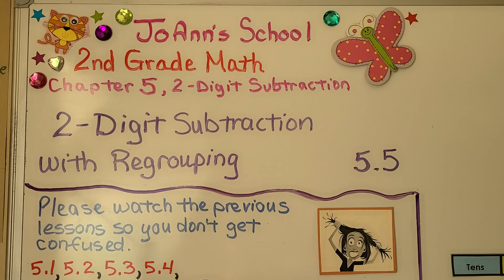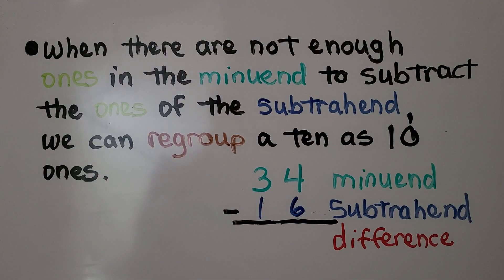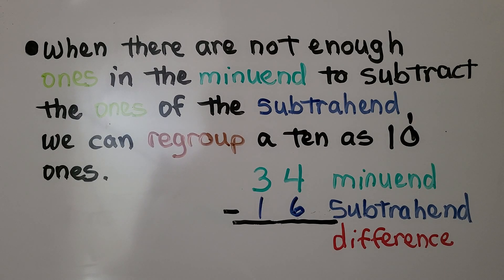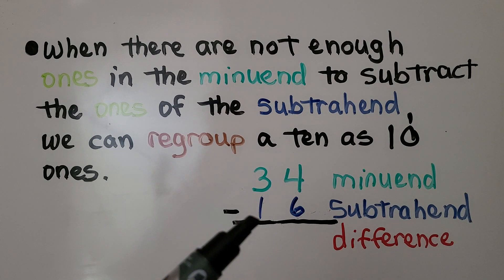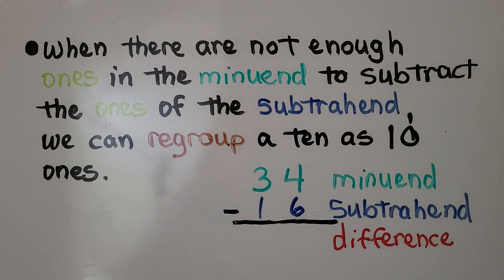Lesson 5.5: Two-Digit Subtraction with Regrouping. In the last couple of videos, we've learned when there are not enough ones in the minuend to subtract the ones of the subtrahend, we can regroup a ten as ten ones. This is the minuend, and we're taking away the subtrahend. The answer would be the difference.